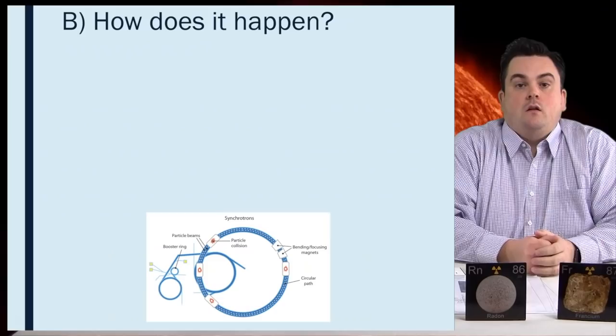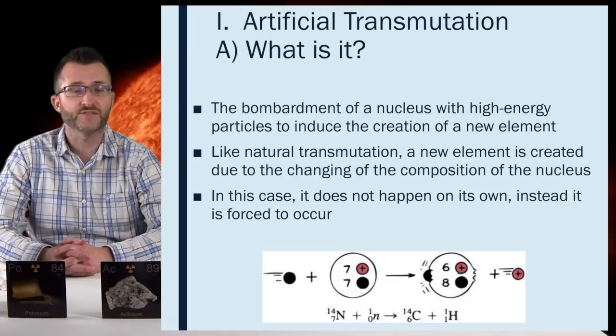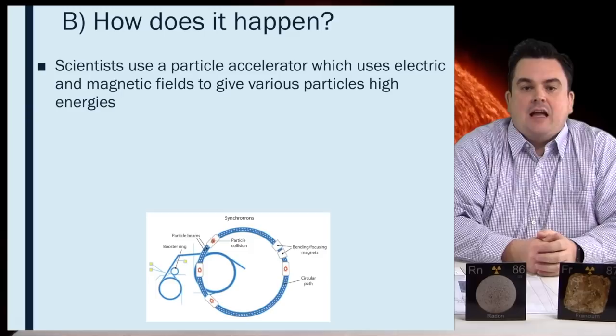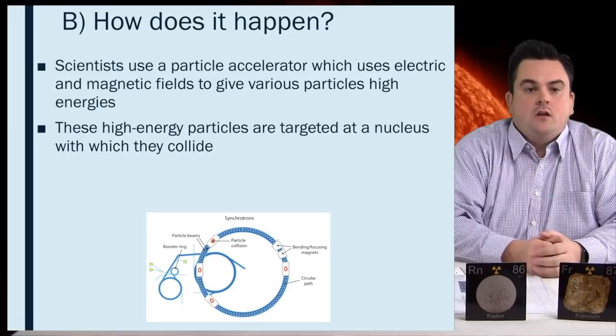How does it happen? Scientists use a particle accelerator which uses electric and magnetic fields to give various particles high energies. These high energy particles are targeted at a nucleus with which they collide. Once the collision occurs, the nucleus absorbs the particle which causes the formation of a new element.